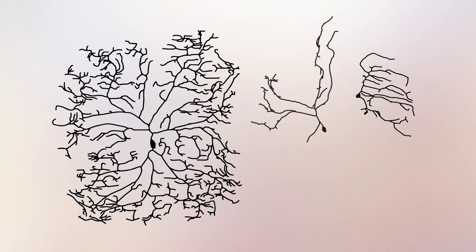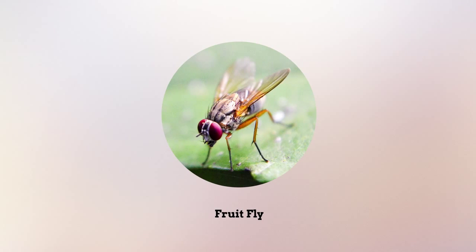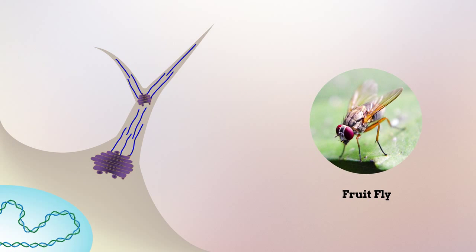This study found that the branching pattern of neurons is determined by a set of proteins that organize microtubules. The researchers used fruit flies to examine how the dendritic branching process is controlled.